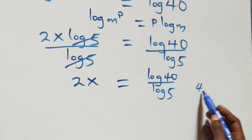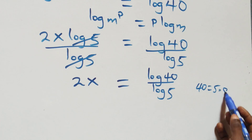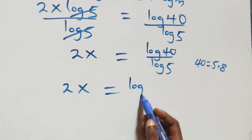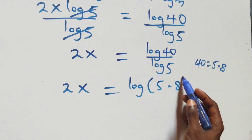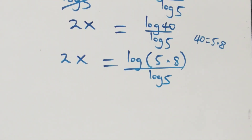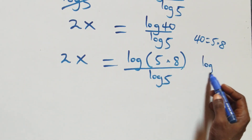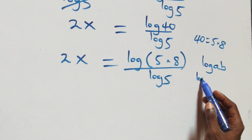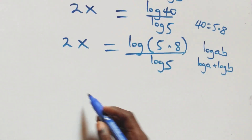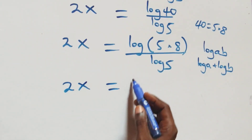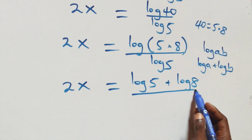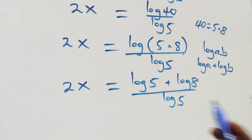The next step: we can write 40 as 5 times 8. So here this becomes 2x equals log(5 times 8) over log 5. Then, applying the log product rule — when we have log(a times b), this is the same thing as log a plus log b.